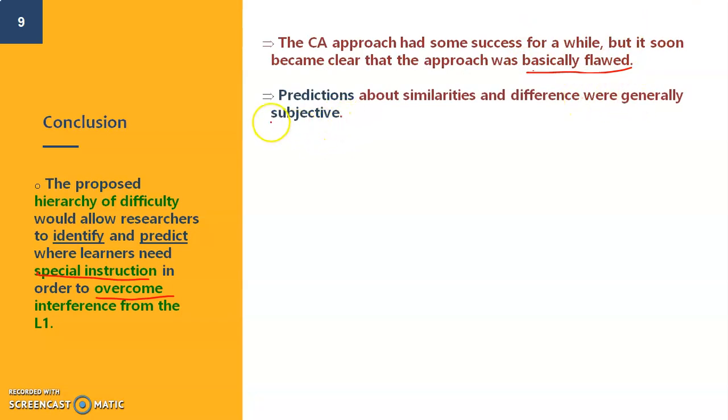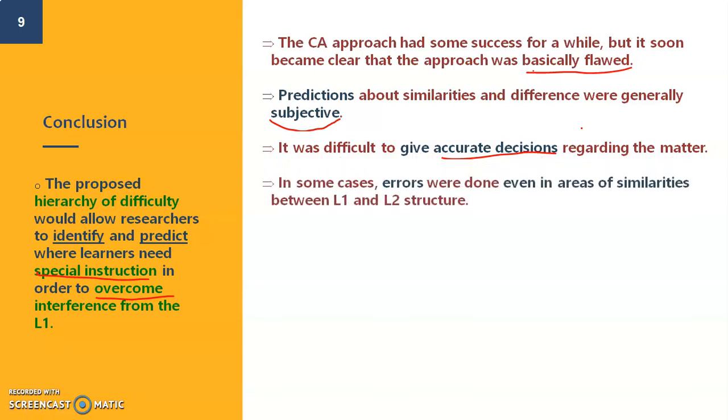That is unique to one person. Not all people who are Arabs will have the same errors. Not all Arabic speakers will have the same mistakes when learning English or when learning French, so it cannot be general. Another thing is that it was difficult to give accurate decisions regarding the issue. You cannot decide the hierarchy of the difficulty all the time. In some cases, errors were observed even in areas of similarities. It's not always about the areas of differences. So what is happening here if this is an area of similarity, why is the person making mistakes or errors?